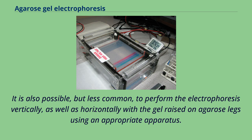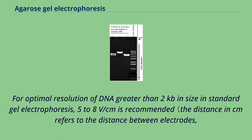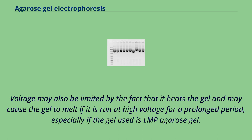The buffer used in the gel is the same as the running buffer in the electrophoresis tank, which is why electrophoresis in the submarine mode is possible with agarose gel. For optimal resolution of DNA greater than 2 kilobases in standard gel electrophoresis, 5–8 V/cm is recommended, where the distance in cm refers to the distance between electrodes. Voltage may also be limited by the fact that it heats the gel and may cause it to melt if run at high voltage for a prolonged period, especially if using LMP agarose gel.